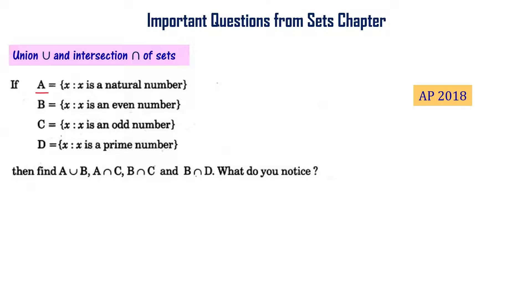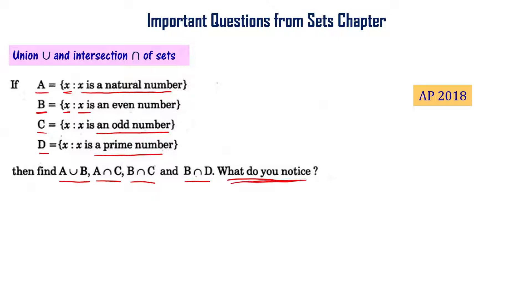A is a set of natural numbers. B is a set of even numbers. C is a set of odd numbers. D is a set of prime numbers. We need to find A union B, A intersection C, B intersection C, and B intersection D, and write what you notice. This is from Andhra Pradesh final exam 2018, one mark each. We need to learn union and intersection concepts clearly.